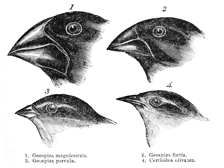Apart from the Cocos finch, which is from Cocos Island, the others are found only on the Galapagos Islands. The term "Darwin's finches" was first applied by Percy Lowe in 1936, and popularized in 1947 by David Lack in his book Darwin's Finches. Lack based his analysis on the large collection of museum specimens collected by the 1905–06 Galapagos expedition of the California Academy of Sciences, to whom Lack dedicated his 1947 book.